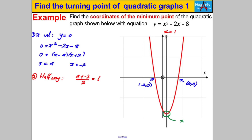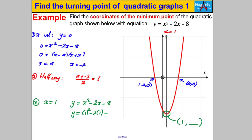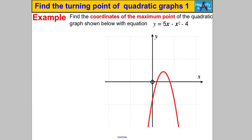We know the minimum point has x-coordinate 1. Step 3: substitute x = 1 into y = x² - 2x - 8. This one we can do without a calculator: 1² - 2×1 - 8 = 1 - 2 - 8 = -9. So y = -9, and the minimum point is (1, -9).